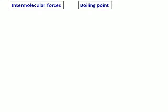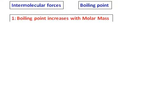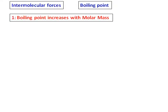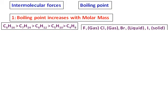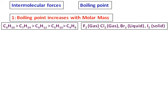Now let's see how intermolecular forces affect the boiling point. The first rule is: boiling point increases with molar mass. So if the compound has a higher molar mass, it will have a higher boiling point.